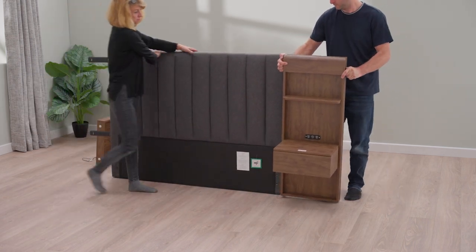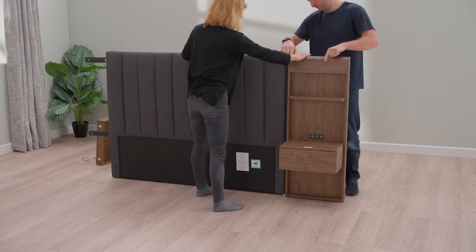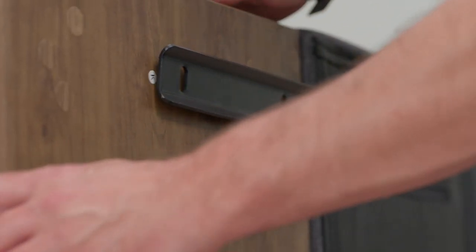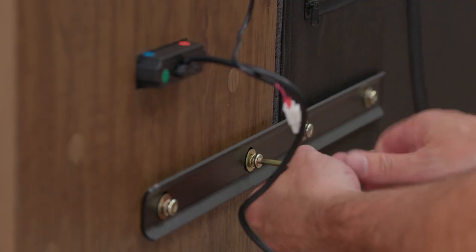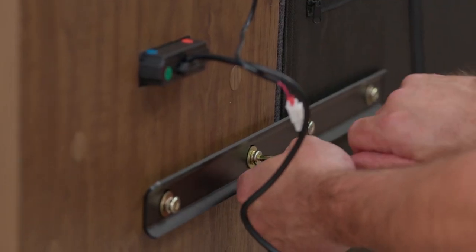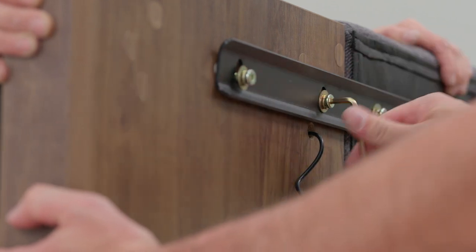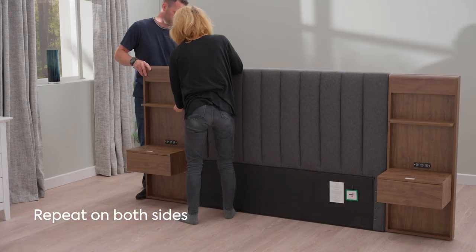Before tightening, ensure the feet are on the floor of each wing and not held higher. Gently push the side of the wing up against the headboard so there is no gap and use an Allen key to tighten all bolts to 100%. Repeat on both sides.